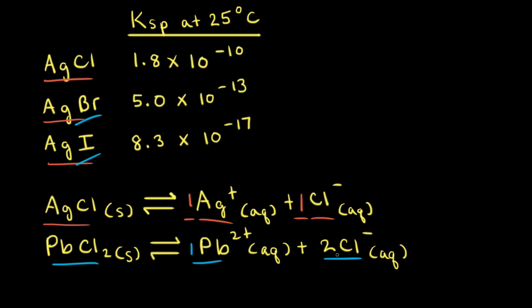Here are the Ksp values for the three silver halide salts at 25 degrees Celsius. For silver chloride, it's 1.8 times 10 to the negative 10th. For silver bromide, it's 5.0 times 10 to the negative 13th. And for silver iodide, it's 8.3 times 10 to the negative 17th. When comparing salts that produce the same number of ions, the higher the value of Ksp, the higher the solubility of the salt.